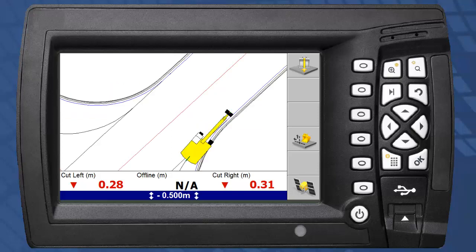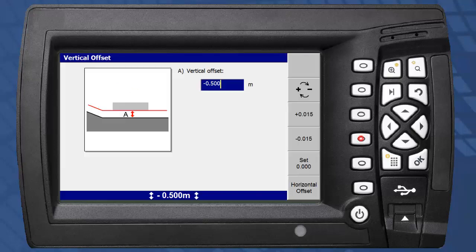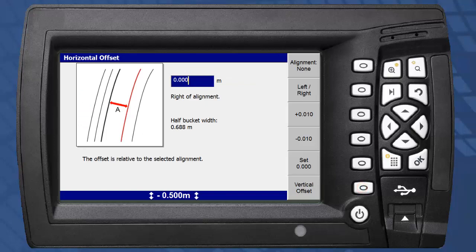Returning to the offset options, we will now look at horizontal offsets. The horizontal offset options allow an operator to select and optionally offset a line to receive horizontal guidance.